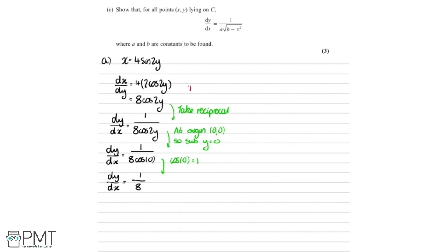We get one mark for attempting to differentiate x equals 4 sine 2y and then taking the reciprocal to get dy by dx. Then we get the second mark for recognising that the origin is (0, 0), substituting that in, and getting dy by dx equals 1 over 8.